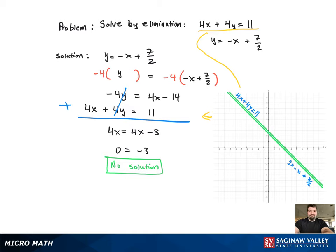When you look at the graph, notice that both lines are parallel to each other with no intersection points. That's why there's no solution.